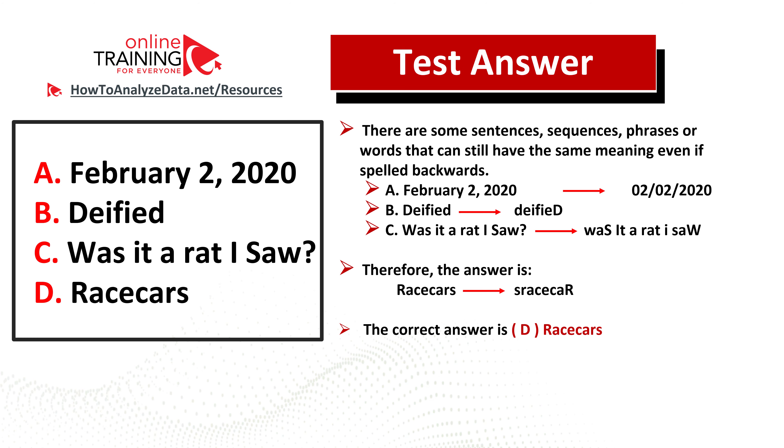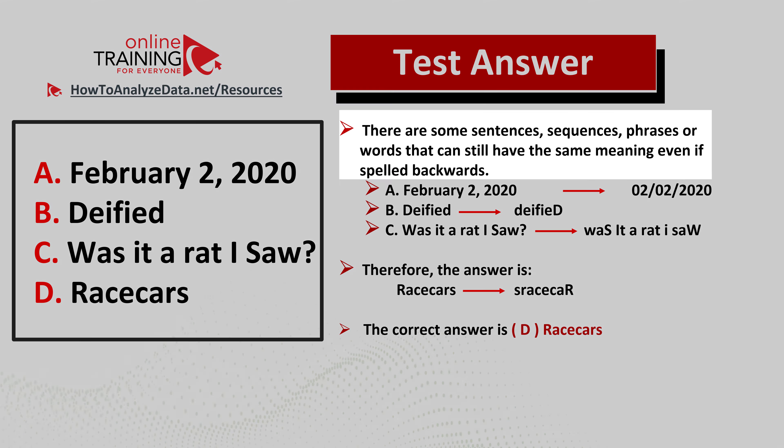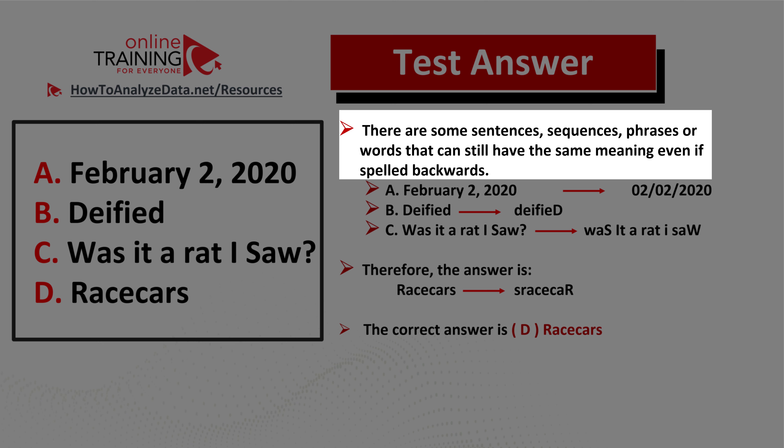As you might be well aware, in the English language there are some sentences, sequences, phrases, or words that can have the same meaning even if spelled backwards. Three of the items here fall into this category. For example, choice A, February 2, 2020, can have the same meaning even if it's spelled backward.